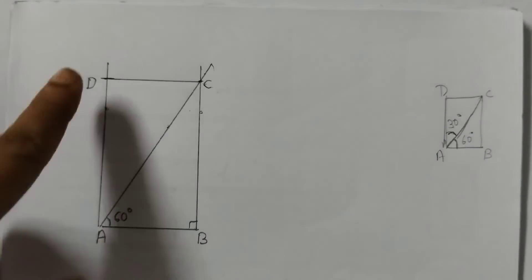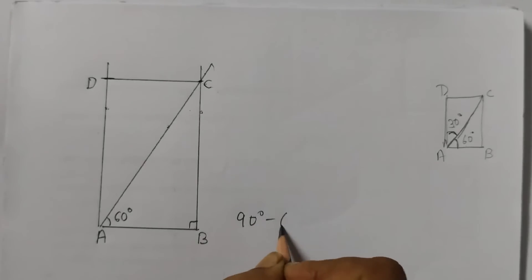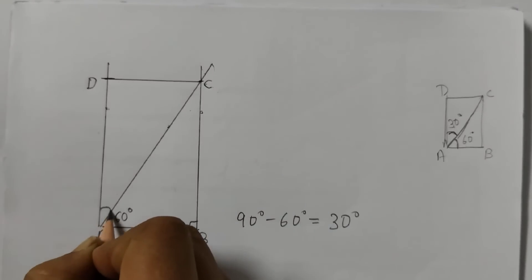Now see here this is 60 degrees. And this angle that we have drawn is 90 degrees. So 90 degrees minus 60 degrees is equal to 30 degrees. So this angle here is 30 degrees.